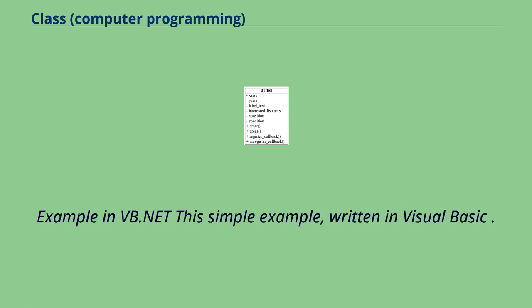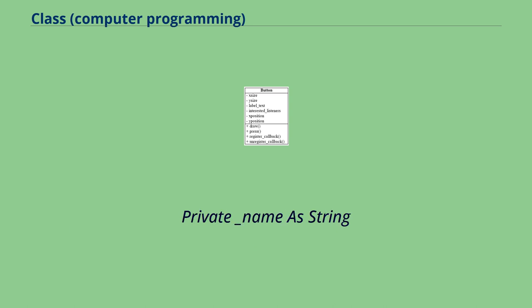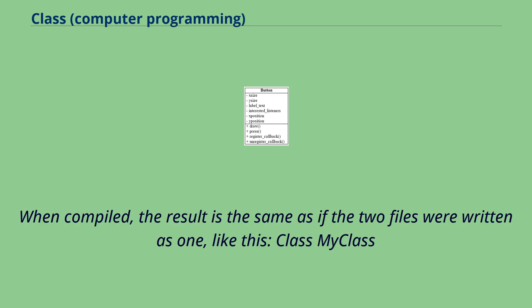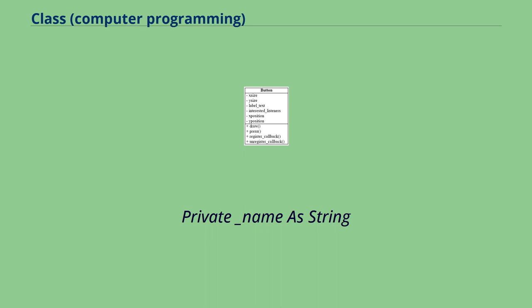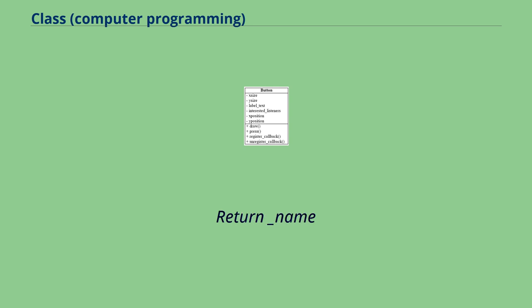A simple example written in Visual Basic .NET shows how parts of the same class are defined in two different files. One file defines 'Partial Class MyClass' with a private field '_name As String', and another defines the public read-only property. When compiled, the result is the same as if the two files were written as one unified class containing both the private field and the public read-only Name property.